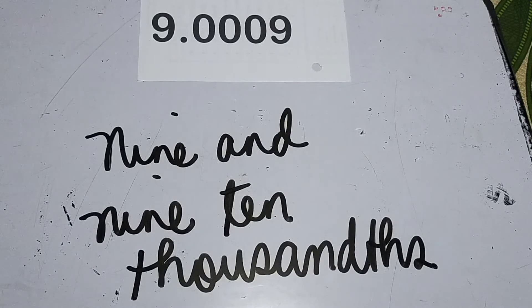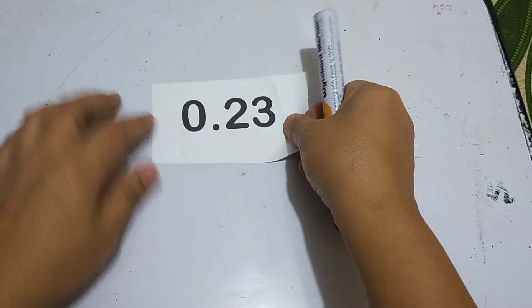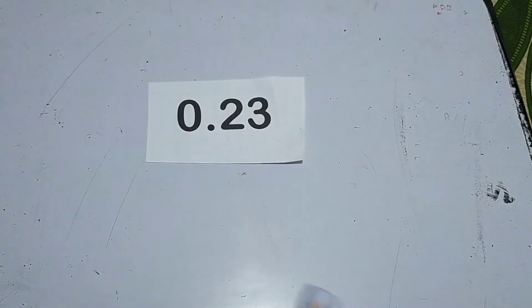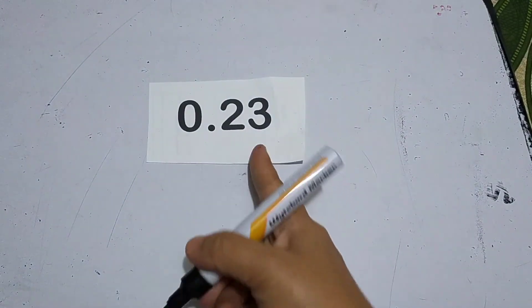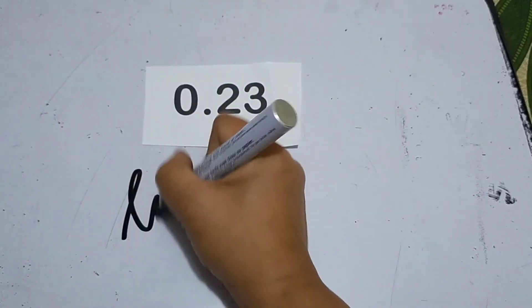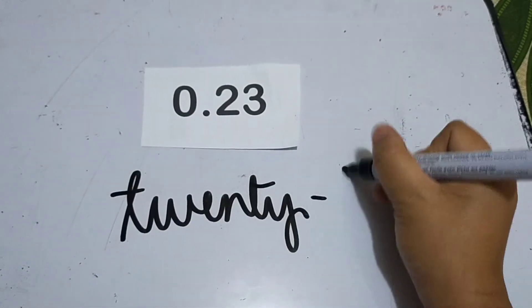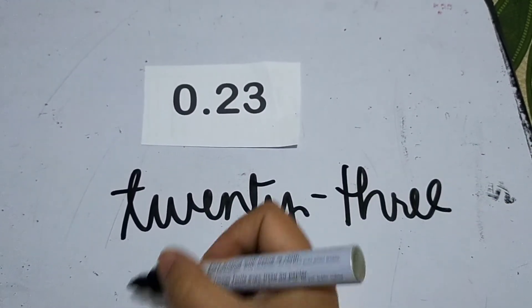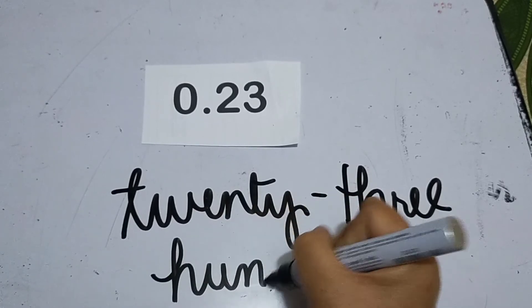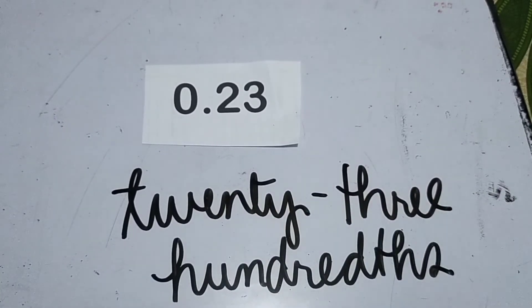Let's have another one. This one: 23 hundredths. 20, 3 hundredths. There's a dash, yeah?